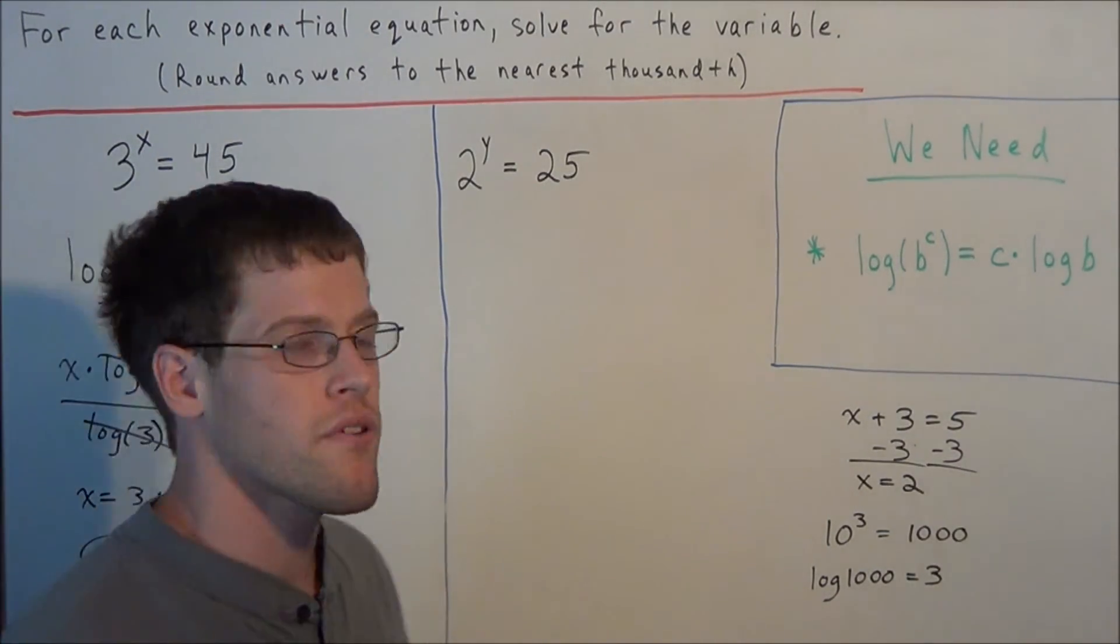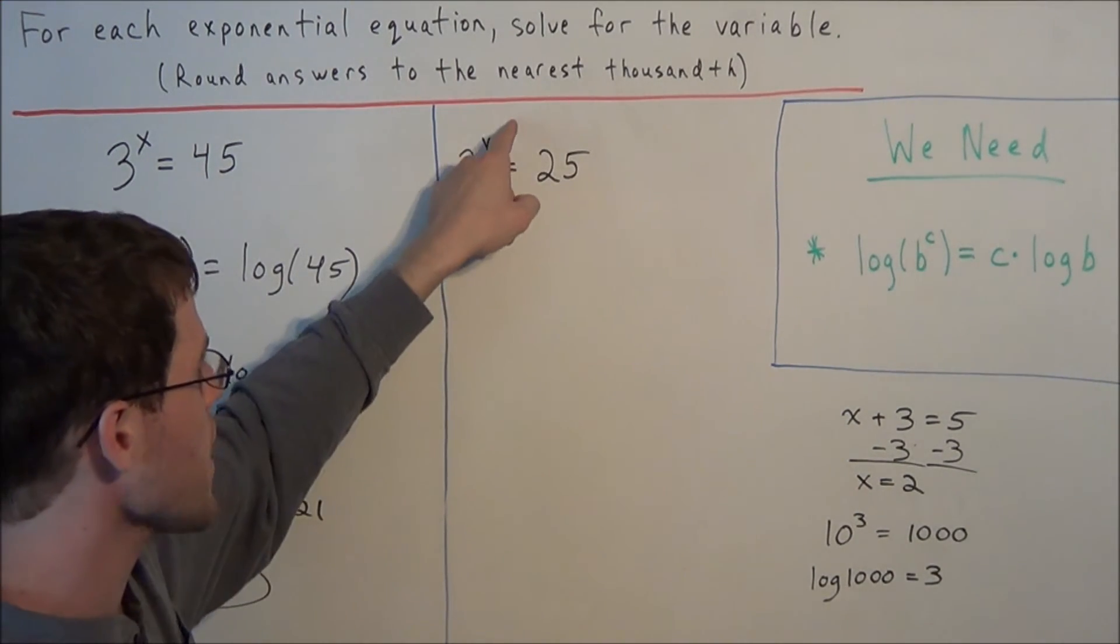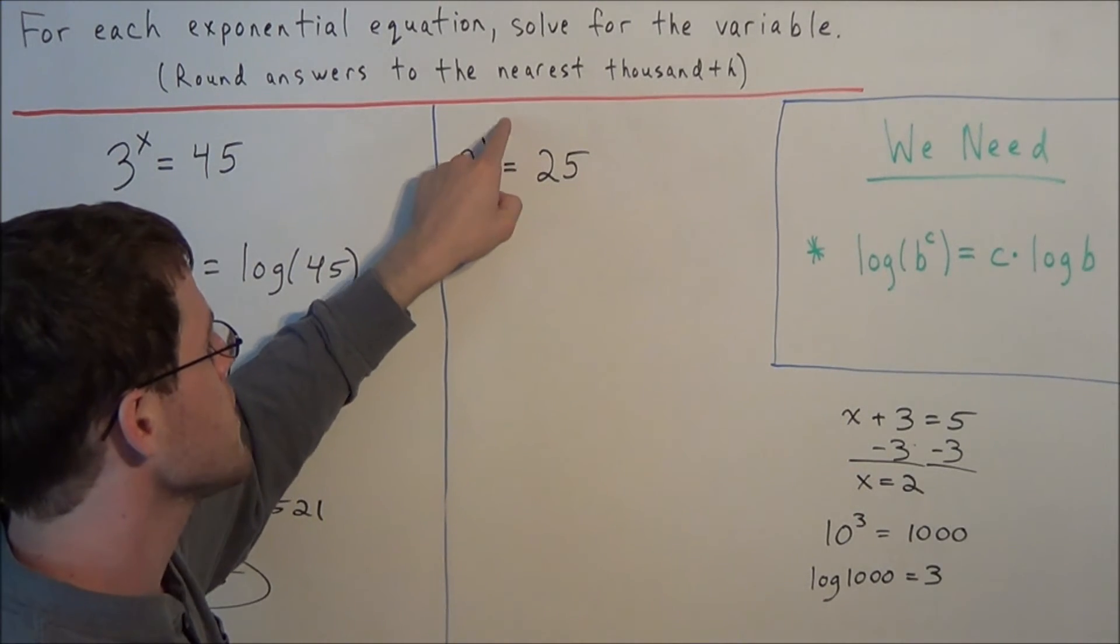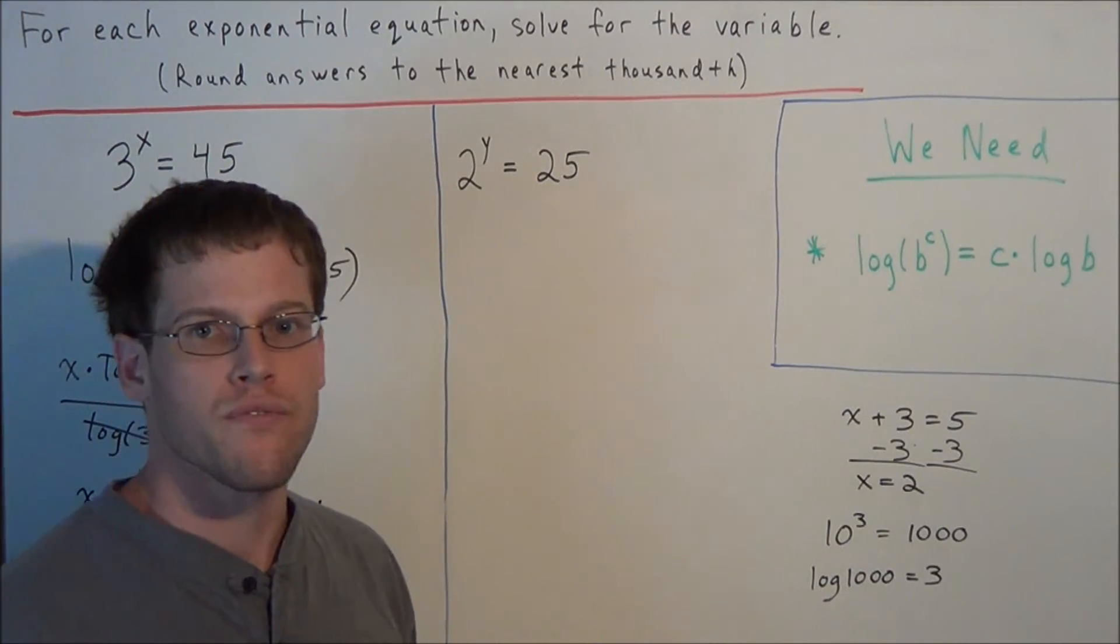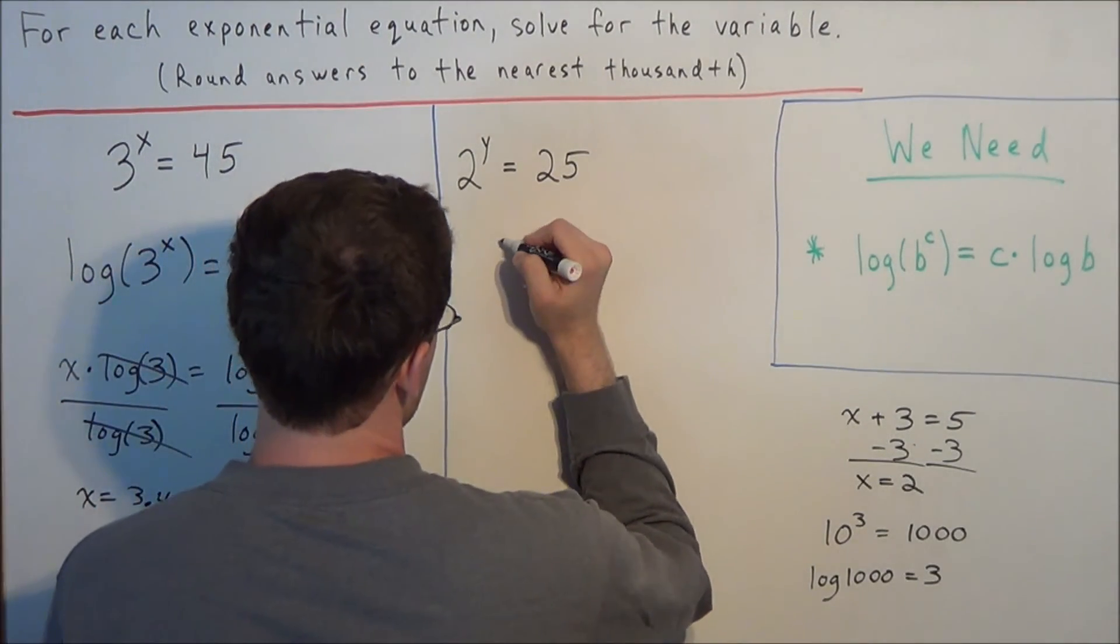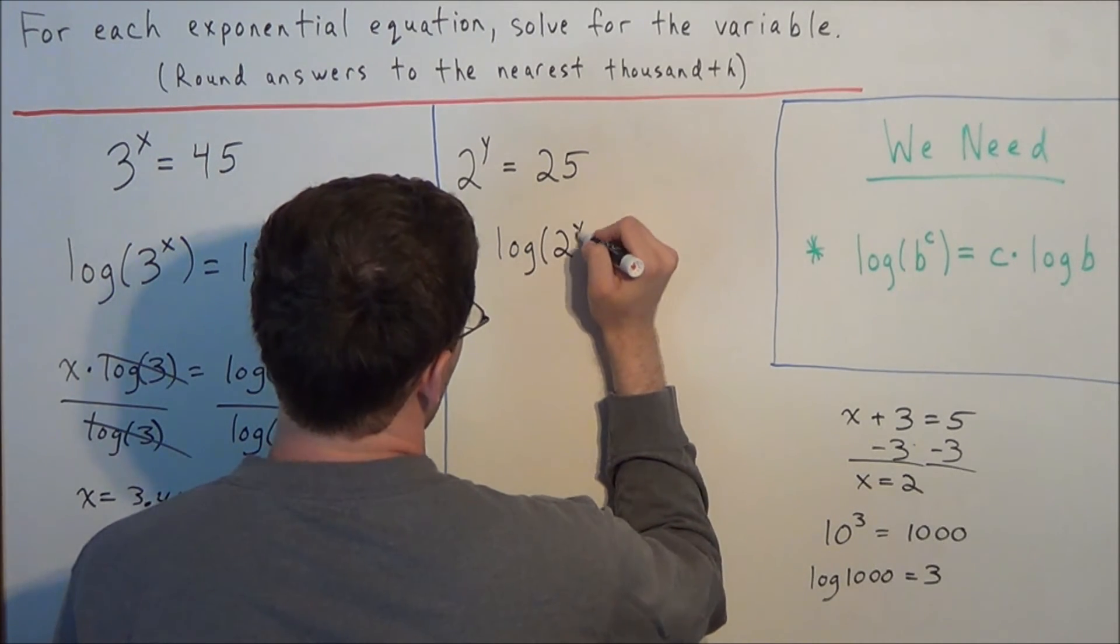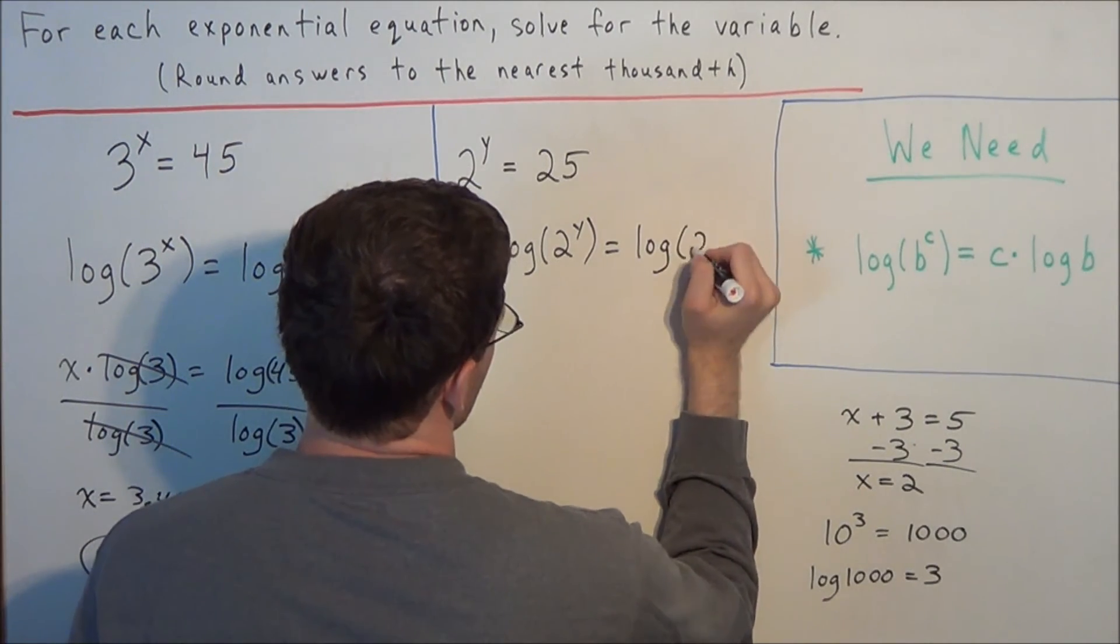So now for the next problem we're going to do something very similar. We're going to take the log of both sides because remember the variable is the exponent and when we want to solve for a variable that is attached to an exponent term we need to do the inverse of exponents which is logarithms. So we take the log of both sides so we have the log of 2 to the y is equal to the log of 25.